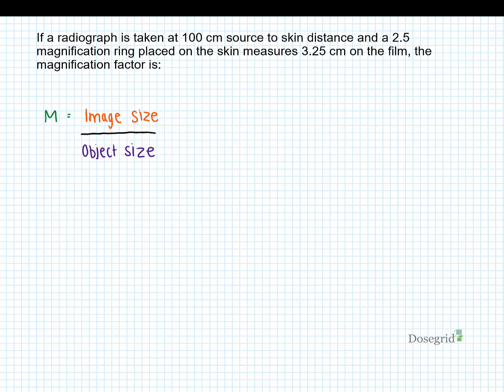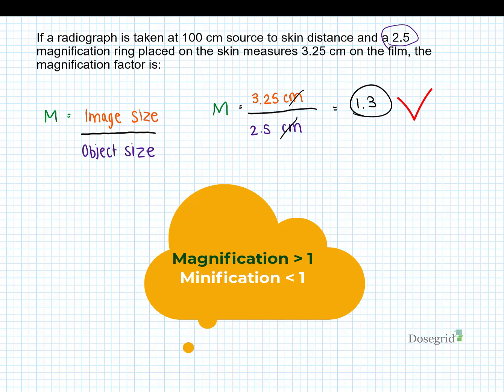Again, mag factor is image size over object size, so in this case 3.25 divided by 2.5. Now stop and think about whether the answer makes sense. It does—the magnification factor should always be greater than 1 because it's a measure of how much larger something appears compared to the actual size.